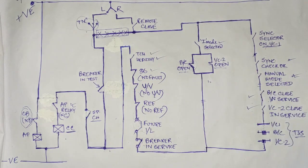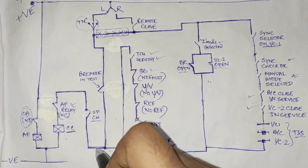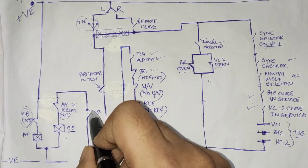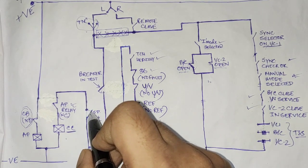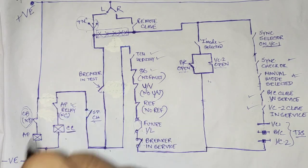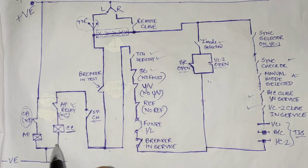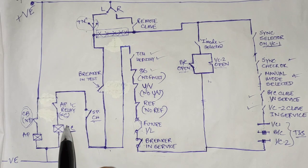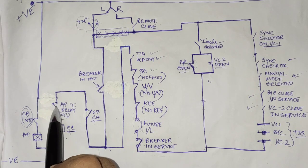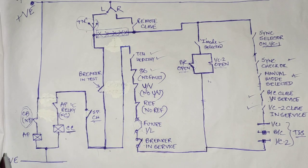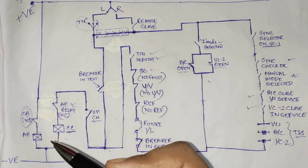After this, the spring charge contact is checked. If the trip spring is charged, the contact is closed and the closing circuit is complete. Next is the anti-pumping relay circuit. The main breaker closing coil has an anti-pumping relay NC contact in series, meaning the anti-pumping relay has not yet energized at this point.